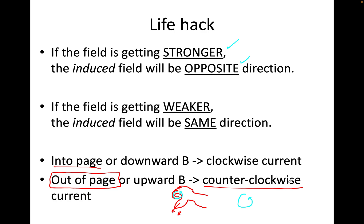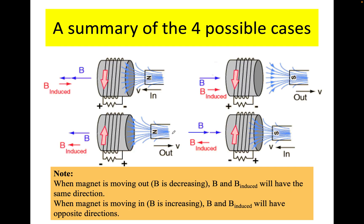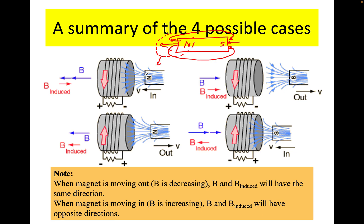Now let's say I had the south pole of a magnet here. The field comes out of the north and goes into the south. Depending on which part of the magnet is entering or leaving, that's the area we consider. I'm going to look at the north pole side only for this example. The field from the north is pointing this way and coming in — it's getting stronger. So the induced field must be in the opposite direction because it's getting stronger.